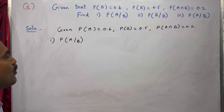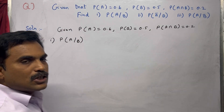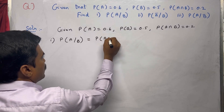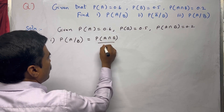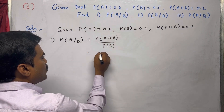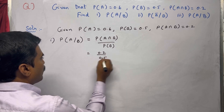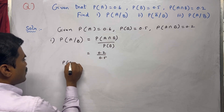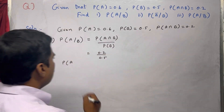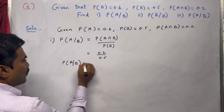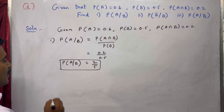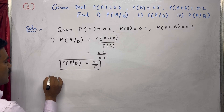So what is P(A|B)? Using the conditional probability definition, we can write this as P(A∩B) / P(B). P(A∩B) = 0.2 and P(B) = 0.5. Dividing — multiplying and dividing both sides by 10 — we get P(A|B) = 2/5. So the first one is done.